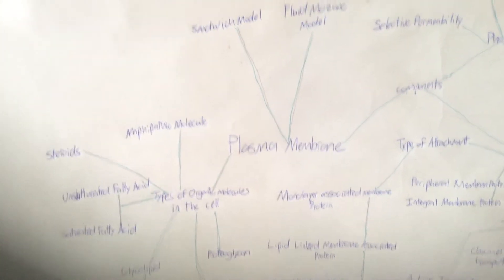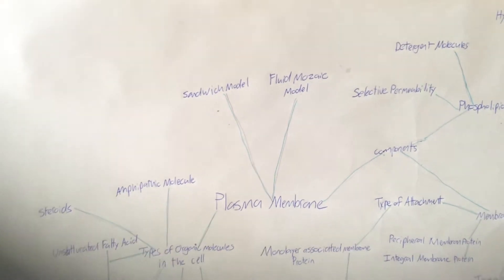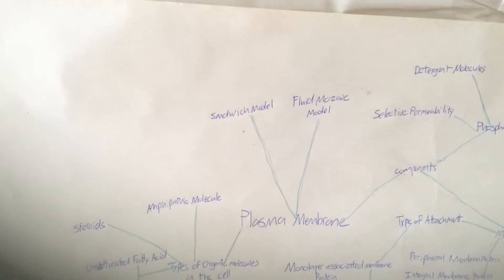So we start here at the plasma membrane, and then we go up to the sandwich model and the fluid mosaic model, because they are two different ideas of the structure of the plasma membrane.